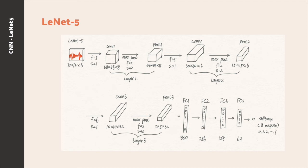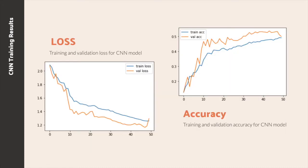Here is our structure for the LeNet-5 convolutional neural network. In total, we have three convolutional layers, three max-pooling layers, and then four linear layers at the end. In the training process, training accuracy converges to 49.1% and validation accuracy converges to 50.1%.